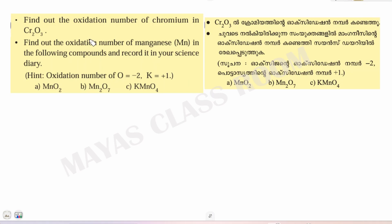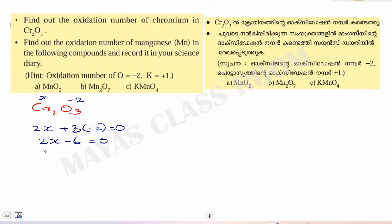Find out the oxidation number of chromium in Cr₂O₃. The oxidation number of oxygen is minus 2. So: 2x + 3(−2) = 0, giving 2x − 6 = 0, then 2x = 6, and x = 6/2 = 3. The oxidation number of chromium in Cr₂O₃ is +3.